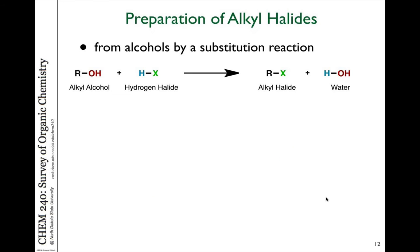One of the main reactions of alcohols are the substitution reactions in the presence of an acid, a hydrogen halide in particular. We can take an alcohol group and react it with an acid to generate a product where the OH group has been substituted for the halogen and water is the byproduct.